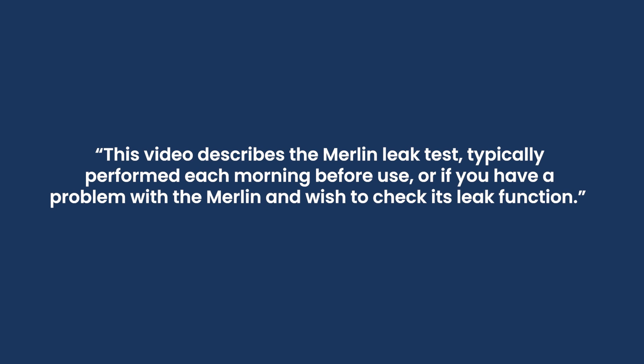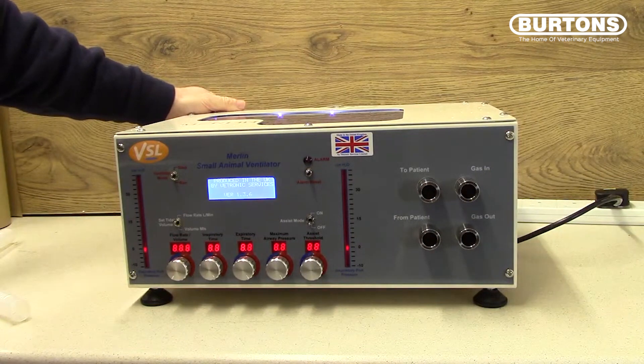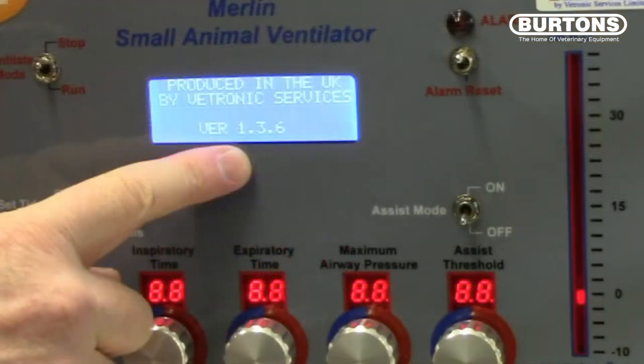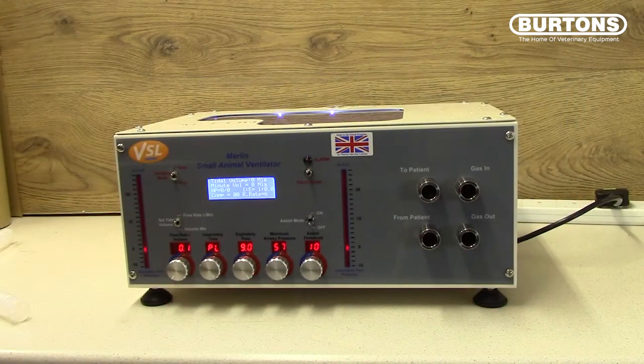This video describes the MERLIN leak test, typically performed each morning before use, or if you have a problem with MERLIN and wish to check its leak function. Turn MERLIN on using the switch at the back. For reference, the software version number will appear on the screen as it starts — you will not need this number for this procedure. Set the controls in the following manner.